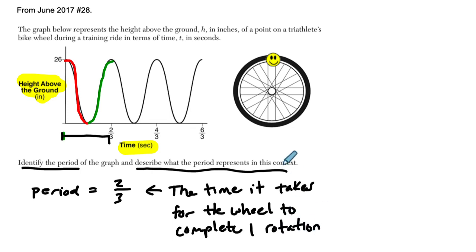Or you could say the time it takes for this point to spin once around the wheel and return back to its original height. Usually the question for a period is to look at some peak to peak or some trough to trough here. And that will help you identify the period length.